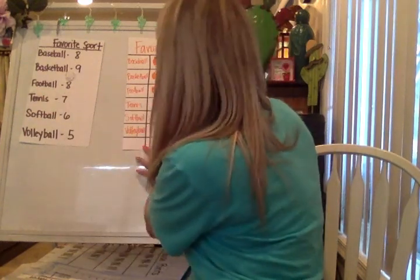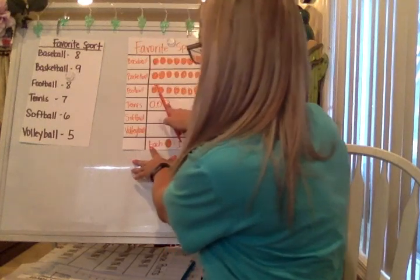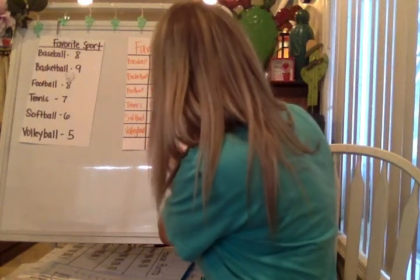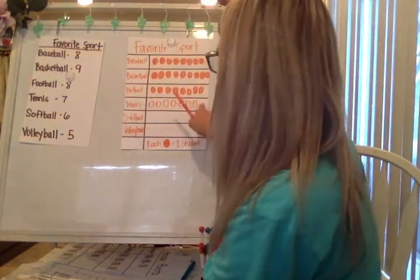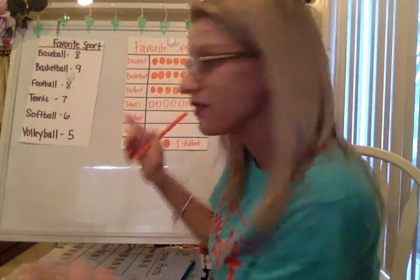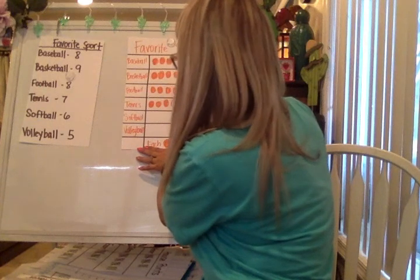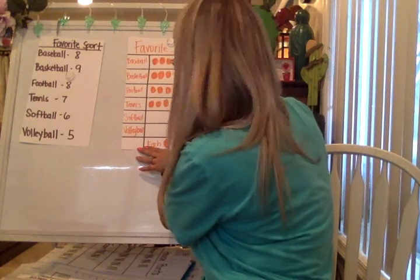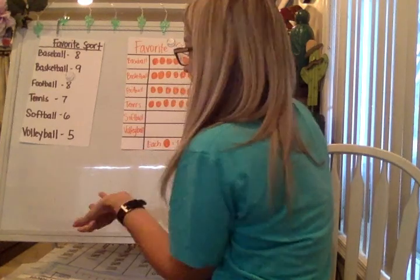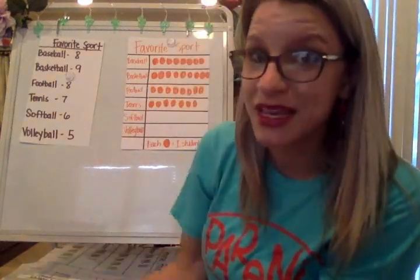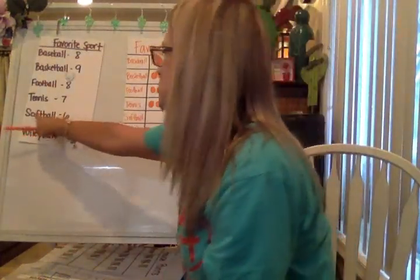Tennis has 7. One, two, three — and I'm looking to draw them right below. Four, five, six, seven. Football had 8, so seven should look like it's one less. Do not rush through this. The picture graph has to look a certain way. Choose a symbol that's going to be easy for you to recreate over and over again — don't choose something too intricate.